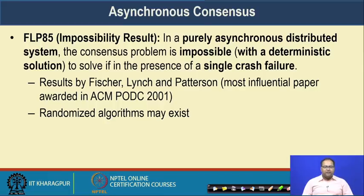There is an interesting result called FLP 85, or sometimes called the impossibility result. The impossibility result states that in a purely asynchronous distributed system, the consensus problem is impossible with a deterministic solution if there is even a single crash failure in the system. In a purely asynchronous distributed environment, if there is a single fault in the system, you cannot design any kind of deterministic consensus protocol for that particular system. However, note the term 'deterministic consensus protocol' — it is true we cannot design a deterministic solution, but we can always design some kind of randomized or probabilistic solution for a purely asynchronous distributed system in the presence of failures.